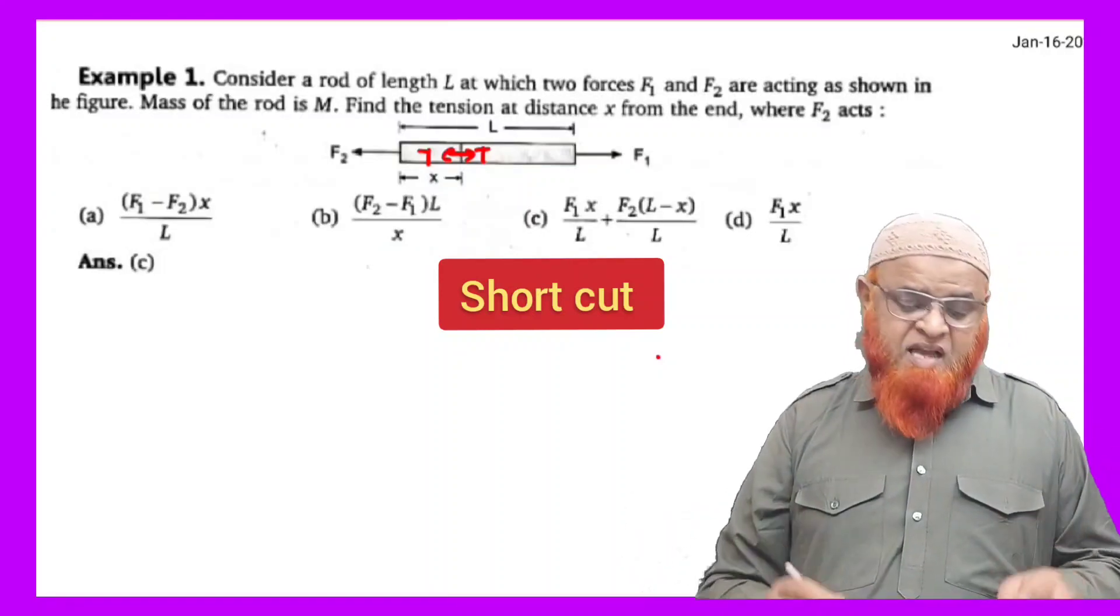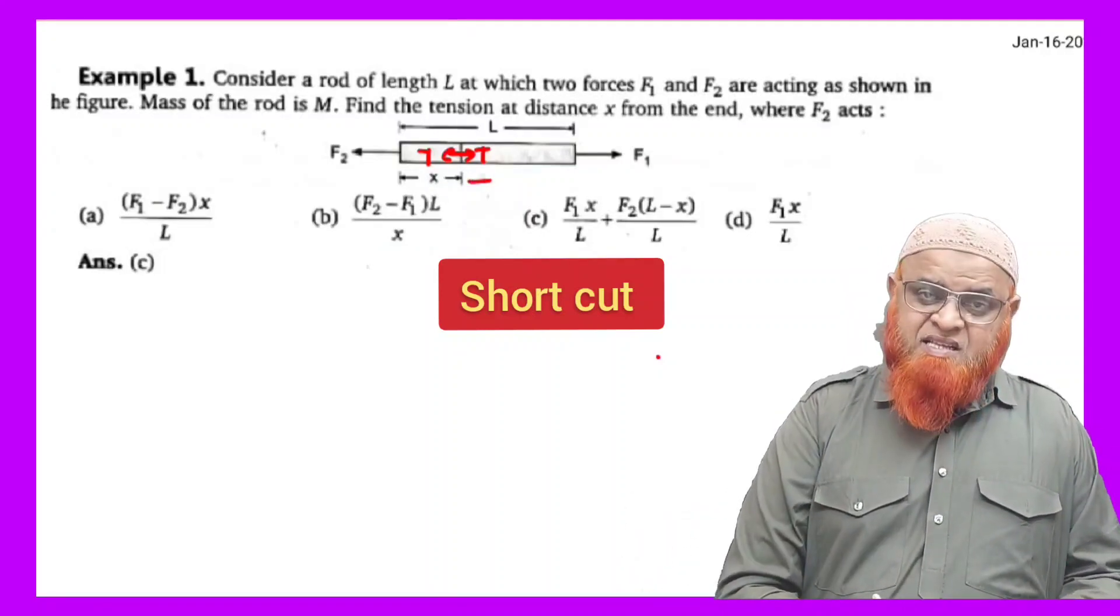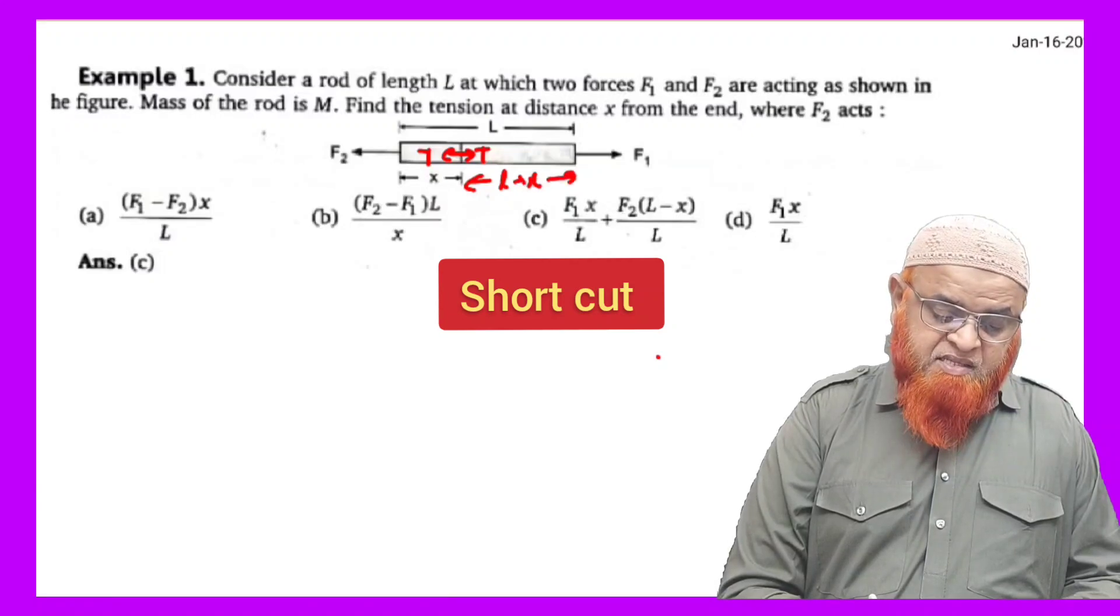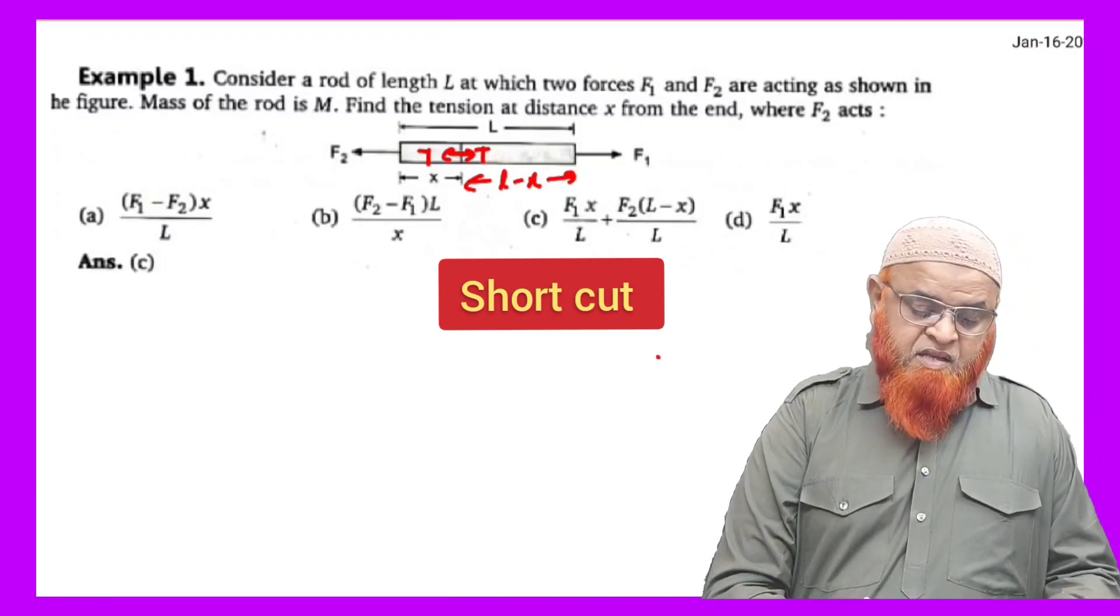So it's very simple. If this is taken as X, the remaining part of the rod is taken as L minus X here.